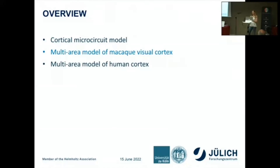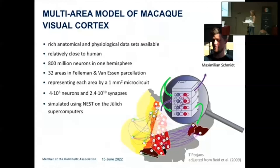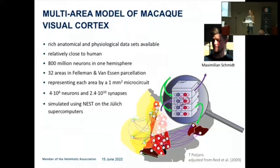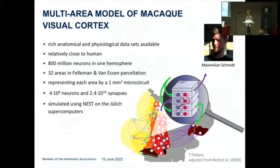We set out to reproduce these things in a multi-area model, choosing the macaque visual system because of the rich anatomical and physiological data available for it. It's also a stepping stone towards modeling the human brain. One hemisphere of macaque vision-related cortex contains on the order of 800 million neurons, but that's still too many to simulate routinely even on supercomputers. So we represent each of the 32 areas in the Fehlermann and Van Essen parcellation by one square millimeter microcircuit model, giving about 4 million neurons connected via 24 billion synapses, simulated using NEST on the Jülich supercomputers.